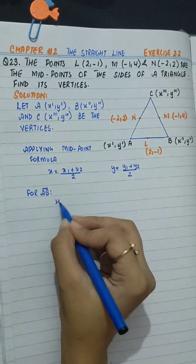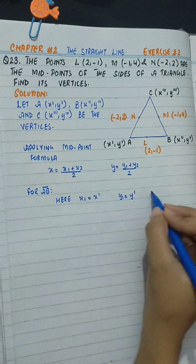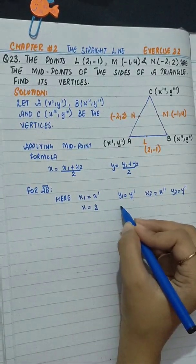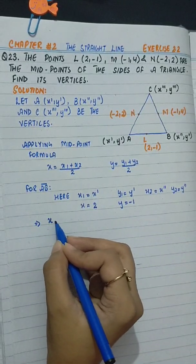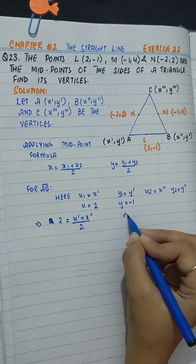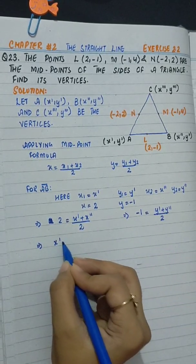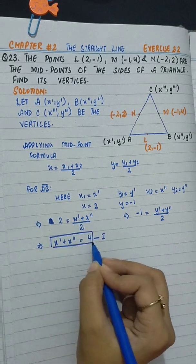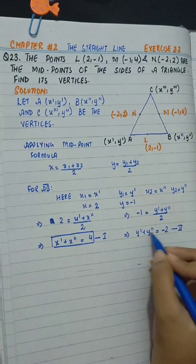For side AB, x1 is x', y1 is y', x2 is x'', y2 is y'', and the midpoint is x equals 2, y equals minus 1. So: 2 equals (x' + x'') divided by 2, and minus 1 equals (y' + y'') divided by 2. This gives us x' + x'' = 4 as equation 1, and y' + y'' = minus 2 as equation 2.